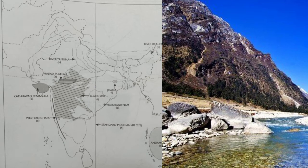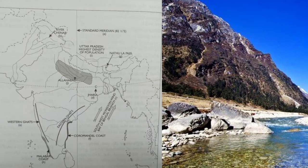On the outline map: mark and name the Eastern Ghats and Western Ghats. Mark and name the river Chenab. Mark with an arrow the direction of the Bay of Bengal branch of the southwest monsoon. Mark 'C' over a coal production area and name it. Mark longitude 82.5 degrees East.